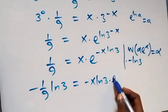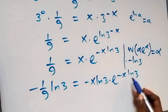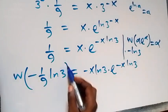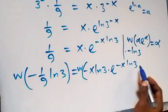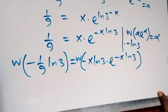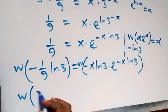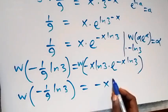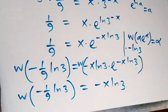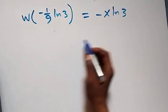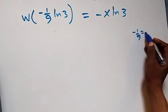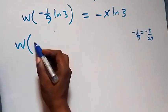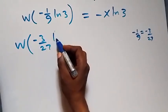Equals minus x ln 3 times e raised to power minus x ln 3. When we introduce the W function on both sides, we have W on the left and W on the right as well. The left side gives W of minus 1 over 9 ln 3. The right side reduces to minus x ln 3. We can also write minus 1 over 9 as minus 3 over 27.